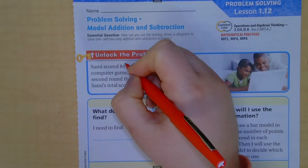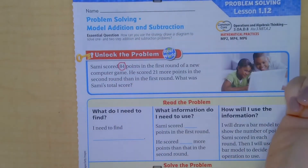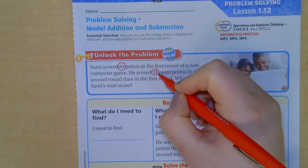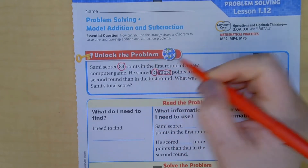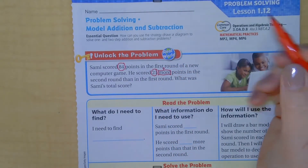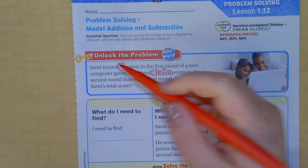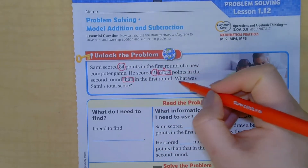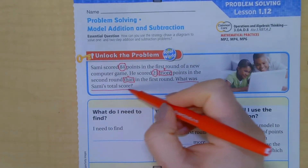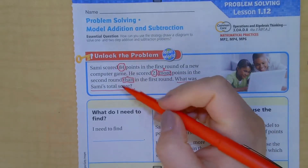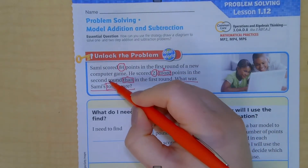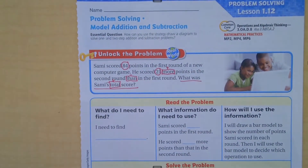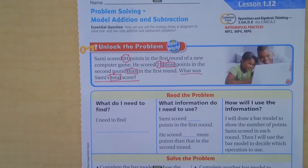Sammy scored 84 points in the first round of a new computer game. He scored 21 more points — 'more' is an addition clue word — in the second round than in the first round. 'Than' is a subtraction clue word. What was Sammy's total score? 'Total' is usually an addition clue word. Now I've circled my important information, boxed my clue words, and underlined my question.